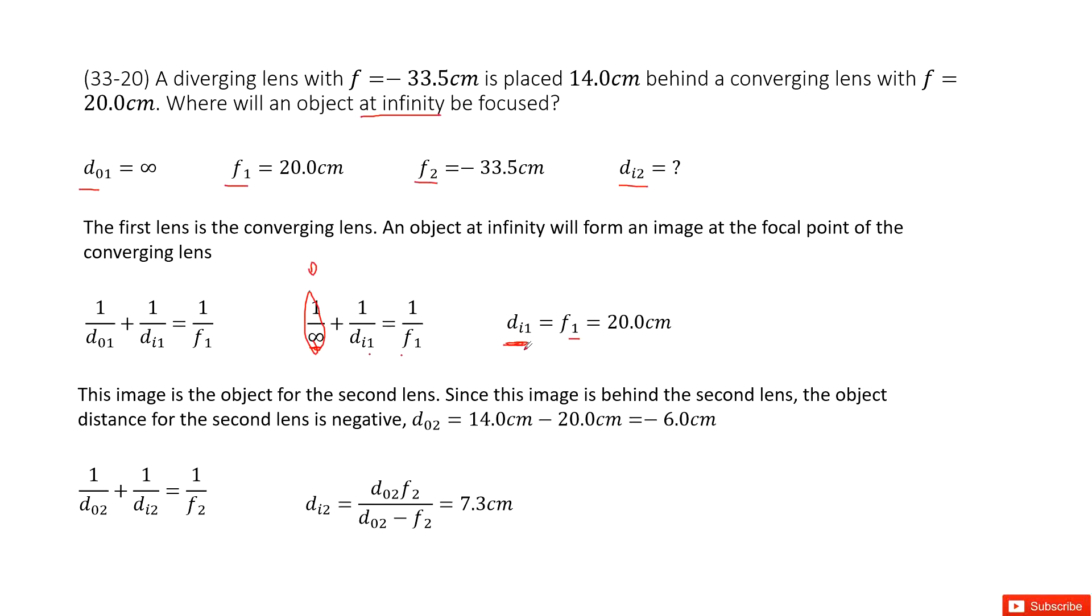The image from the first lens is the object for the second lens. This image is behind the second lens.